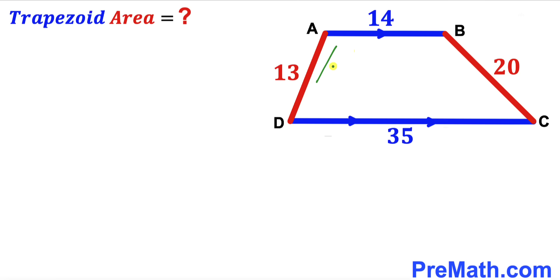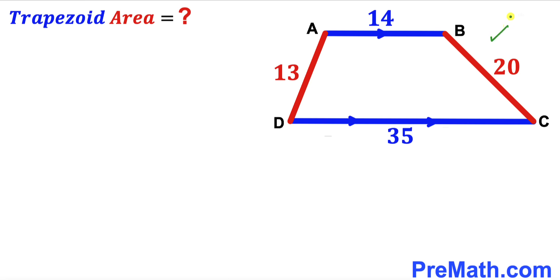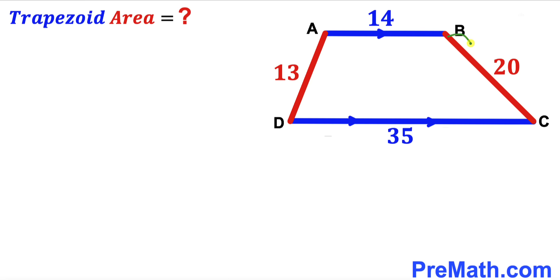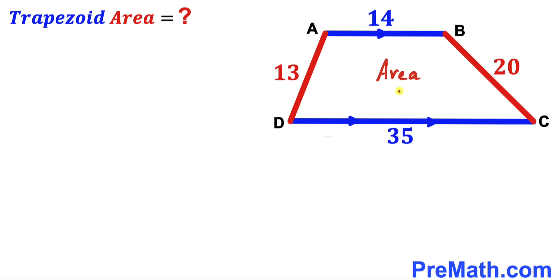Welcome to pre-math. In this video we have got trapezoid ABCD as shown in the given diagram, such that base AB length is 14 units, base CD length is 35 units, side AD length is 13 units, and side BC length is 20 units. Furthermore, base AB is parallel to base CD, and our task is to calculate the area of this trapezoid ABCD.